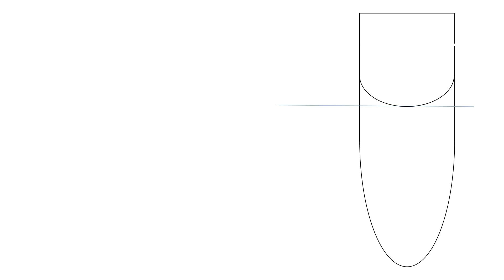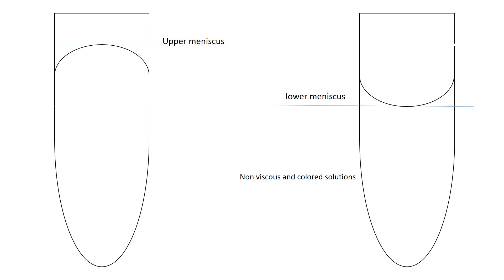When making up the solution in a volumetric flask or measuring cylinder, you will see either an upper meniscus or a lower meniscus. For non-viscous and colored solutions, adjust the volume by looking at the lower meniscus. For viscous solutions, use the upper meniscus to make up to the final volume.